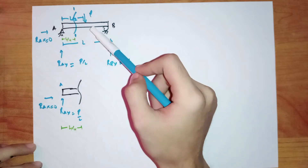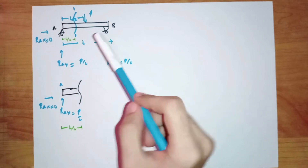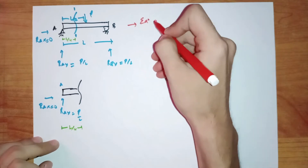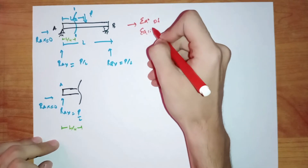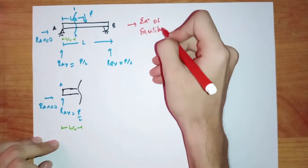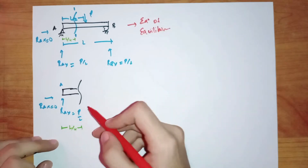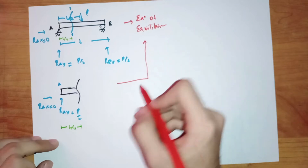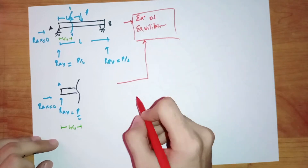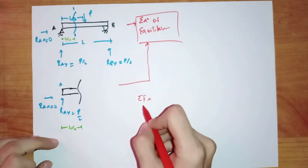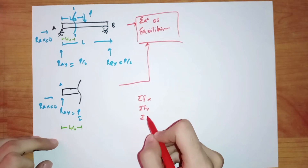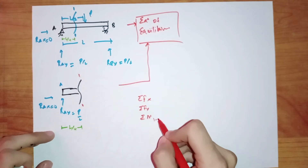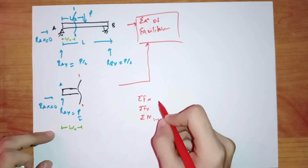Now, if I want this beam segment to remain in equilibrium, it must satisfy the equations of equilibrium. In the same way, if this segment wants to remain in equilibrium, it must also satisfy the equations of equilibrium. And we know the equations of equilibrium are summation of Fx, summation of Fy, and summation of moment about any point, let's say section 1-1, equals to 0.